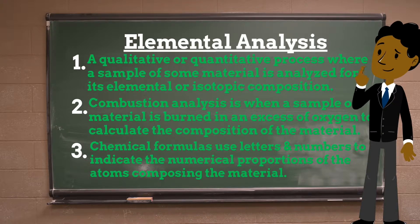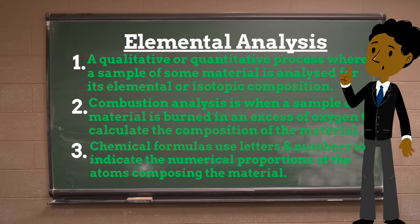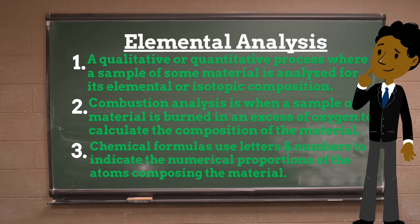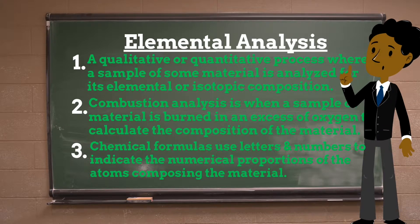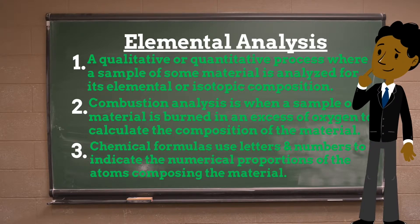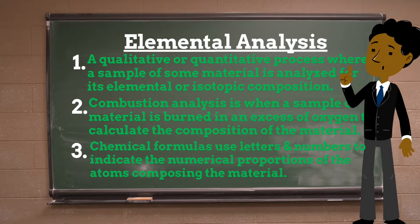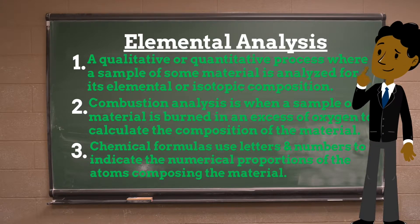The simplest type of chemical formulas are called empirical formulas, which use letters and numbers indicating the numerical proportions of atoms of each type. Molecular formulas indicate the simple numbers of each type of atom in a molecule, with no information on structure.